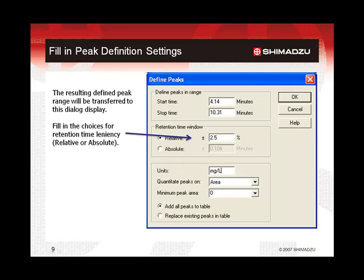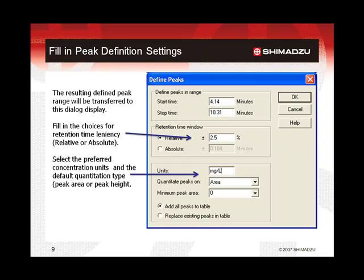With either selection, the window width can be overwritten by the user in the peak table. It is also possible in this display to make an entry for the default concentration units for this set of defined peaks. This should be set to the same concentration units that will be used for the calibration standards. It is also possible to make a selection of the default quantitation type — the choice is to use either peak area or peak height for determining the peak response. These settings can also be made in the peak table. Lastly, the defined peaks can be added to the peak table automatically. If the method already contains peak information, pre-existing entries for matching peak times can be replaced if desired. Clicking OK closes this display and updates the peak table automatically.